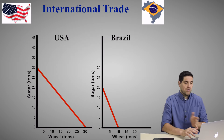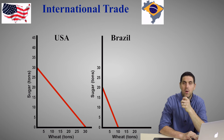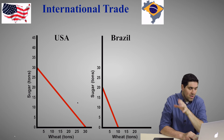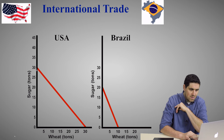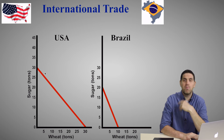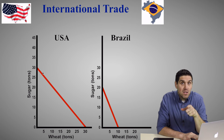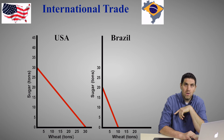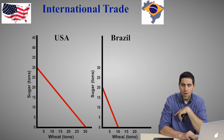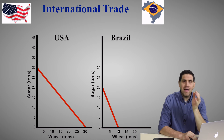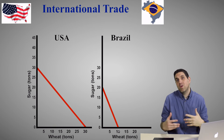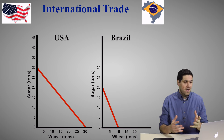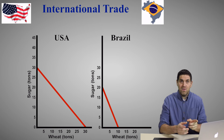Here's a production possibilities curve showing how much sugar and wheat the U.S. can produce and how much sugar and wheat Brazil can produce. Which country has an absolute advantage in sugar? The United States — they can produce 30 tons, and Brazil can only produce 20. Who has an absolute advantage in wheat? The United States — they produce 30, and Brazil can only produce 10. So the United States has an absolute advantage in both. But people assume that if the U.S. can produce more of both, we should produce both. This is where the idea of comparative advantage comes in.